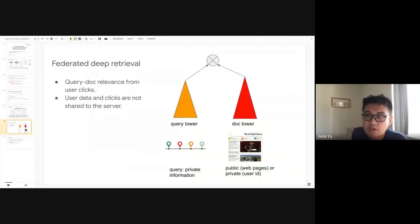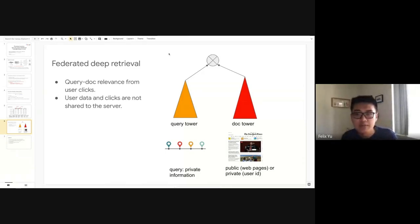One extension of this work is that this algorithm can also be used in the federated deep retrieval setting. Here we are interested in training a query to document relevance model. Typically we are training a two-tower model. The query tower embeds some user query into an embedding space, and the doc tower embeds a document into the same embedding space. We use the dot product to measure the similarity between the query and the document. This model is trained using user clicks. We collect positive data as the clicked query and document pairs. But here we are interested in whether we can train such a model without users sending the clicks to the server. This is essentially the same setting as I talked about.